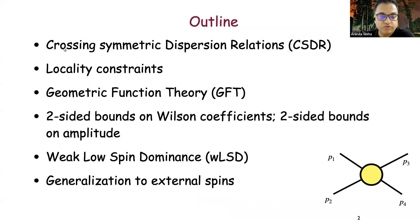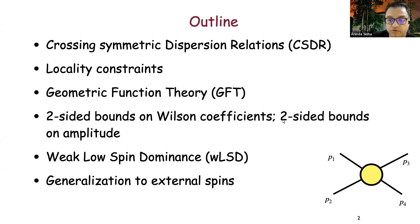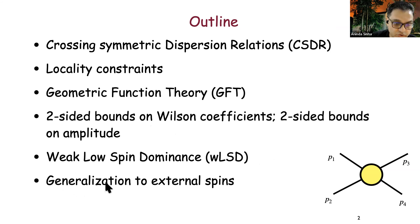Here is an outline of my talk. I'm going to first describe crossing symmetric dispersion relations, as this may not be familiar to most of you. Then I'll talk about locality constraints, which are the equivalent conditions for what are called null constraints in fixed dispersion relations. Then I'll introduce geometric function theory, which captures the crossing symmetric dispersion relations very nicely, and discuss the Biberbach conjecture providing two-sided bounds on Wilson coefficients and on the amplitudes themselves. I'll also briefly mention weak low-spin dominance and, time permitting, generalization to external spins.